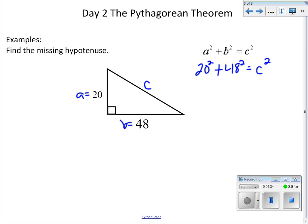20 squared gives us 400. 48 squared—I'm going to have to use a calculator for this one—gives us 2,304, and that equals C squared. When we add these two together, we get 2,704.